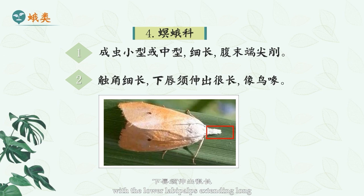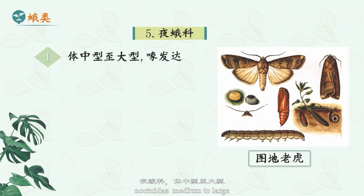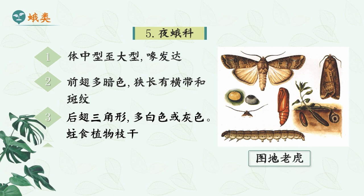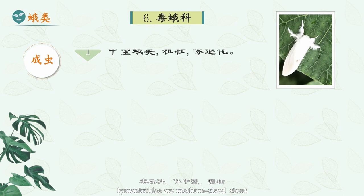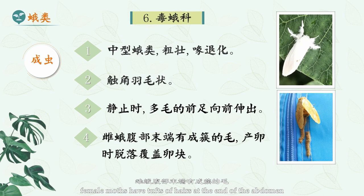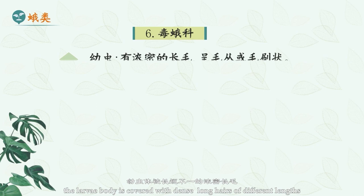Noctuidae: medium to large, with a well-developed beak. Forewings are mostly dark, with horizontal stripes and markings. Hind wings are broad and triangular, mostly white or grey. Larvae are stout, mostly dark. Lymantriidae: medium-sized, stout, and beak-reduced, with thicker scales on the wing surface. When motionless, the hairy forelegs extend forward. Female moths have tufts of hair at the end of the abdomen, which are shed to cover the mass of eggs when laying them. The larvae body is covered with dense, long hairs of different lengths, in the form of tufts or bristles.